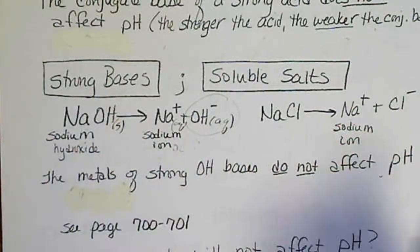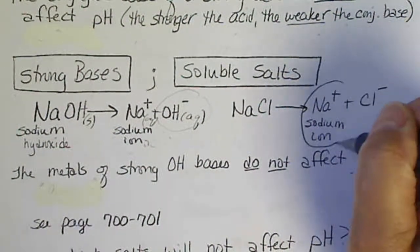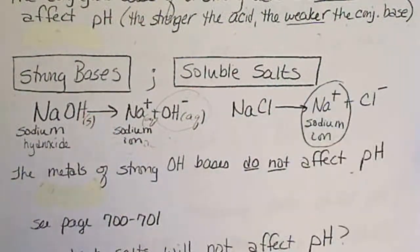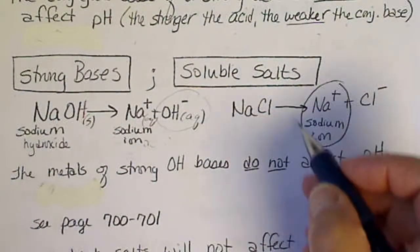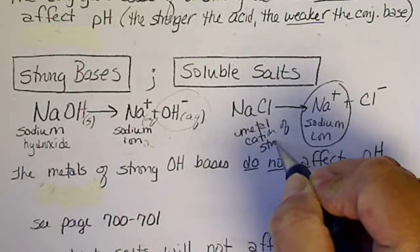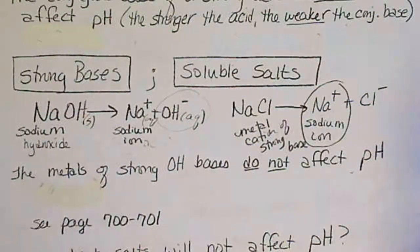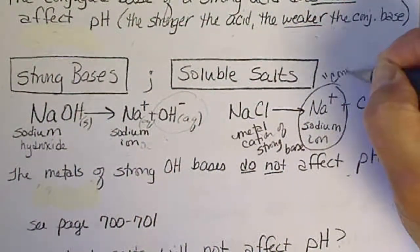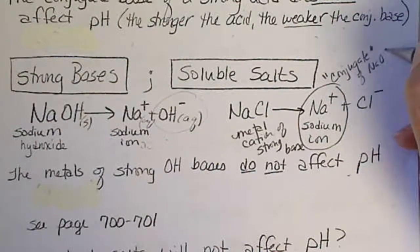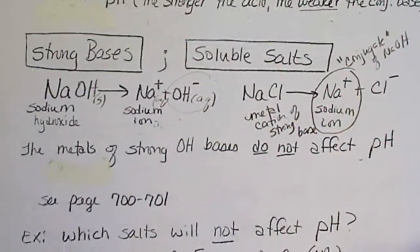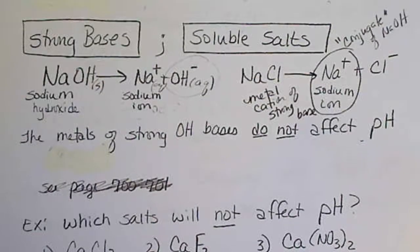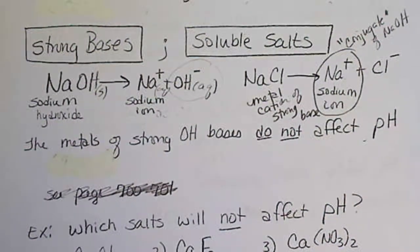Now we look at the metal cation — the sodium ion. Technically, we don't call it the conjugate acid of this base, because the definition of a conjugate acid-base pair requires they differ by H⁺. We call sodium the metal cation of a strong base. So in a way it's a conjugate, but it doesn't fit the strict definition, so we don't call it that. The metals of strong hydroxide bases also do not affect the pH.